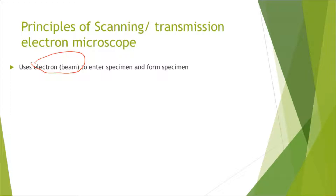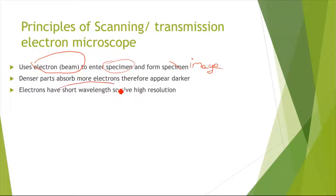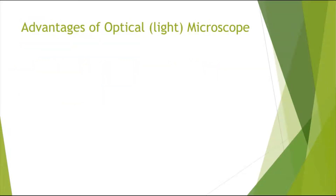In the electron microscope image, the denser parts absorb more electrons and therefore appear darker, so you can tell which organelle is more or less dense. Because electrons have a short wavelength, they give high resolution. These are the principles of the SEM and TEM.